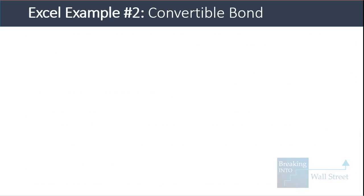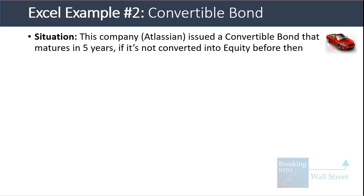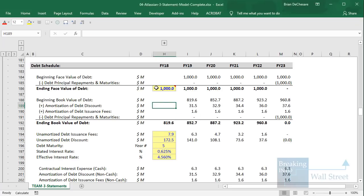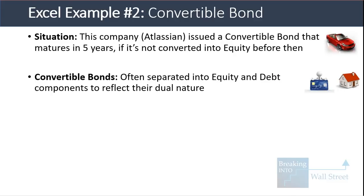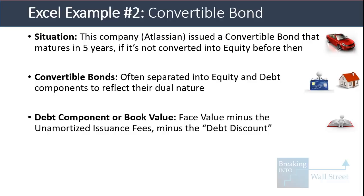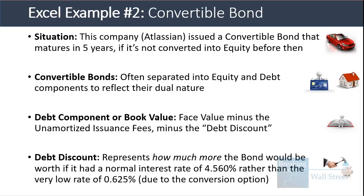Let's look at another Excel example: a convertible bond for Atlassian, a software company, with a five-year maturity. Convertible bonds are often separated into equity and debt components to reflect their dual nature — initially debt, but potentially convertible into equity if the company's share price reaches a certain level. The debt component or book value equals face value minus unamortized issuance fees minus the debt discount.